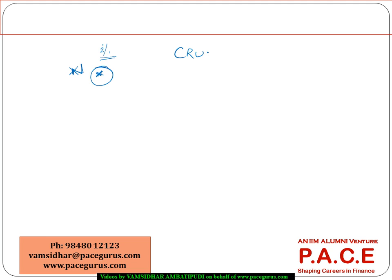That particular estimate of the mortality rate obtained from real world observations, or real world investigation, we are calling as crude mortality rate. But with respect to this crude mortality, there could be some kind of a problem where the values may not be smooth over the ages.